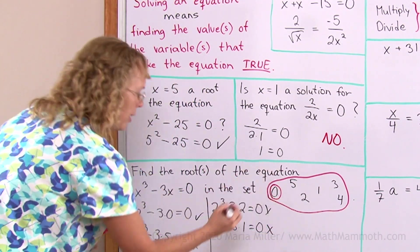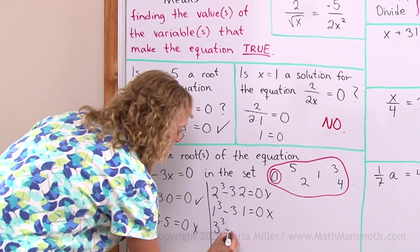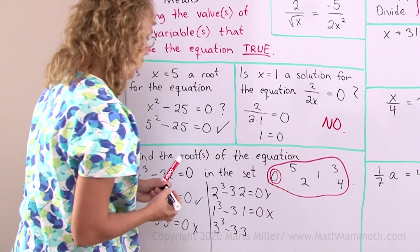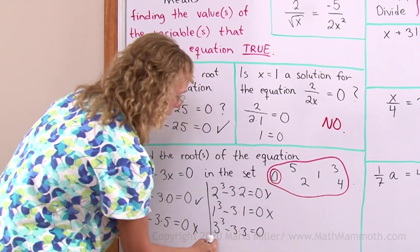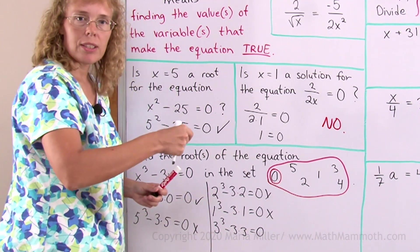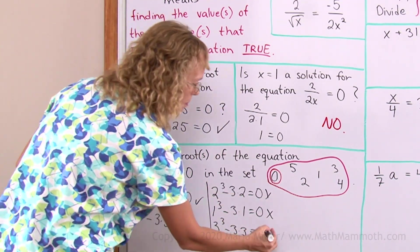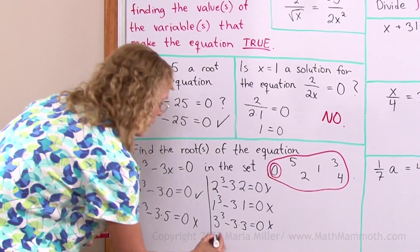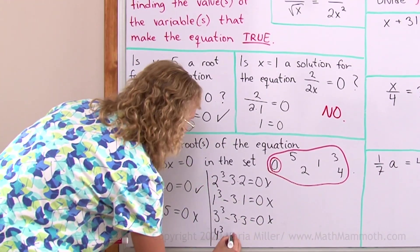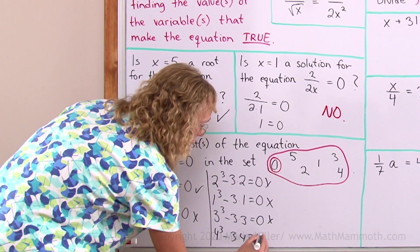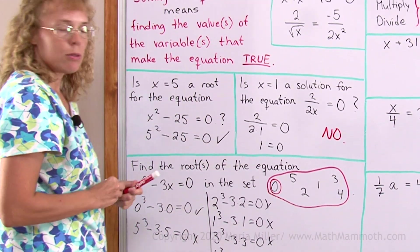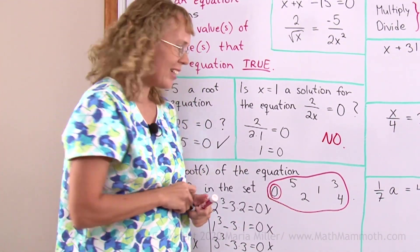And then I try 3. 3 to the 3rd power minus 3 times 3 equals 0. This is 3 times 3 times 3. That's 27. This is 9. Nope. And then 4. 4 to the 3rd power minus 3 times 4. No, that won't work either. So I found the only solution in this set.